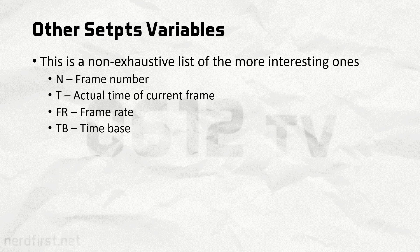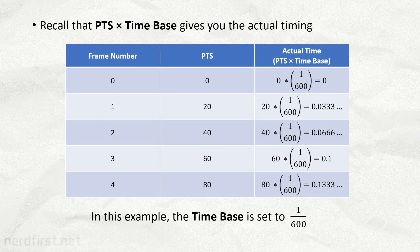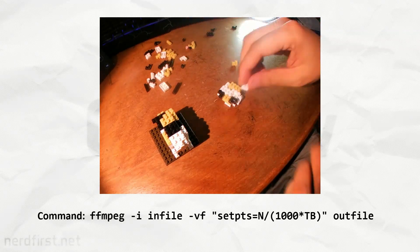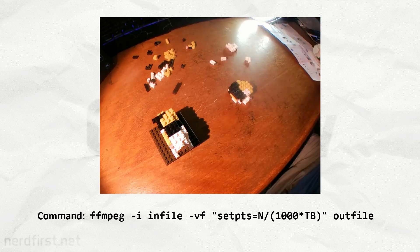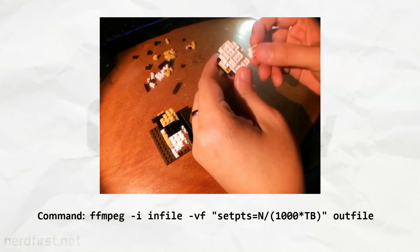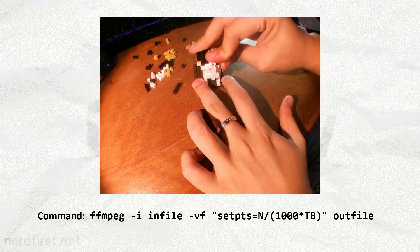The Set PTS filter works with more variables than just PTS. For example, you can work with the actual frame number, and what we call the time base, which is essentially a multiplier for the PTS. Going back to the time-lapse example, we can write a statement like this, which basically sets the new frame rate for our time-lapse. In this one, I'm asking for a thousand frames to go by every second, essentially greatly speeding up my time-lapse. So that, ladies and gentlemen, is what the Set PTS filter is for.